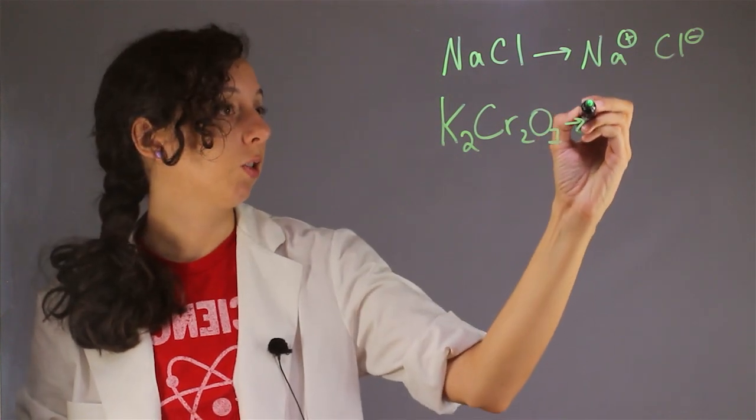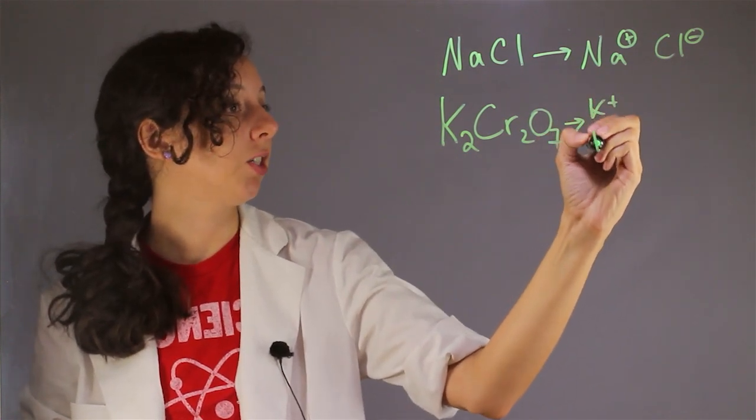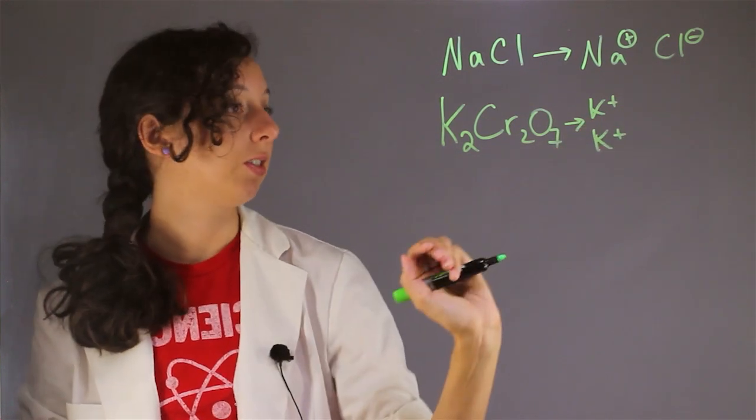Here we have potassium chromate and this is also ionically bonded, that's one of the requirements for salts. And so in solution this breaks up into potassium which each has a positive charge, two of these guys.